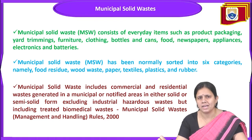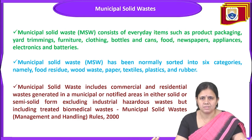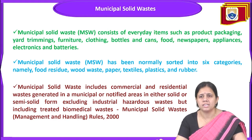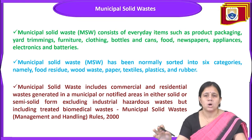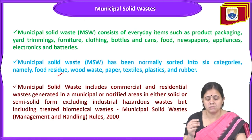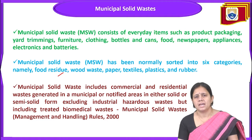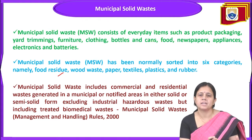Municipal solid waste consists of everyday items such as product packaging, yard trimming, furniture, clothing, bottles, cans, food, newspaper, appliances, electronics and batteries. Municipal solid waste is that waste generated from our household activities — our day-to-day daily life activities. Municipal solid waste is now sorted into six categories. The first category is food residue — waste generated from kitchen, including leftover food, leaf and vegetable cuttings.